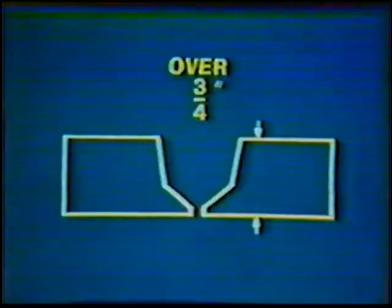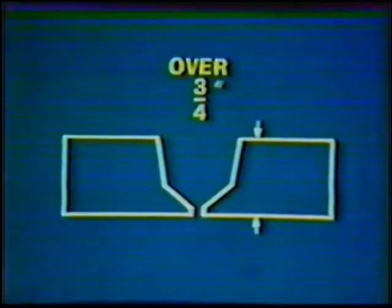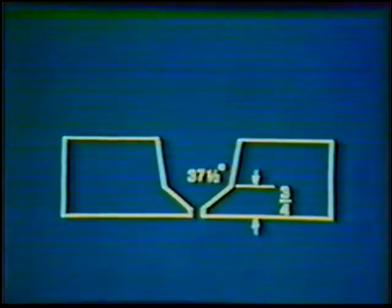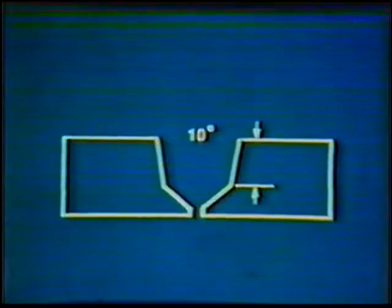For wall thicknesses greater than 3/4ths inch, a modified V-groove is sometimes used in order to reduce the volume of filler metal required, as well as the welding time. A bevel angle of 37 and 1/2 degrees is produced on the joint edge up to 3/4ths of an inch. The remaining pipe wall is prepared with a 10 degree bevel angle.